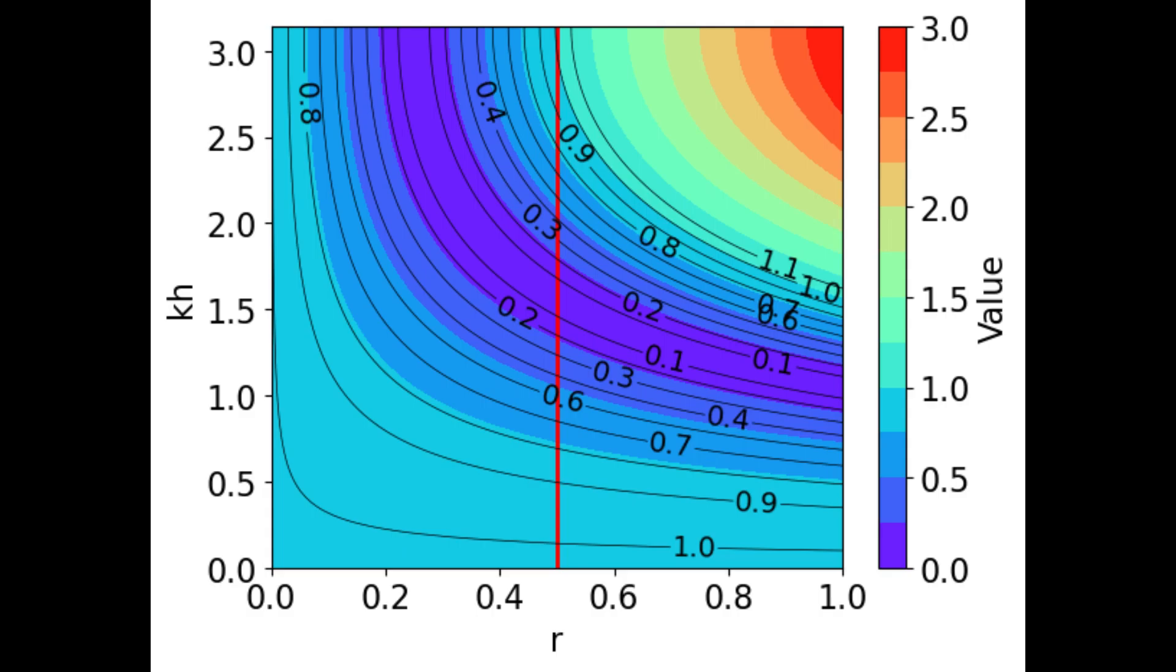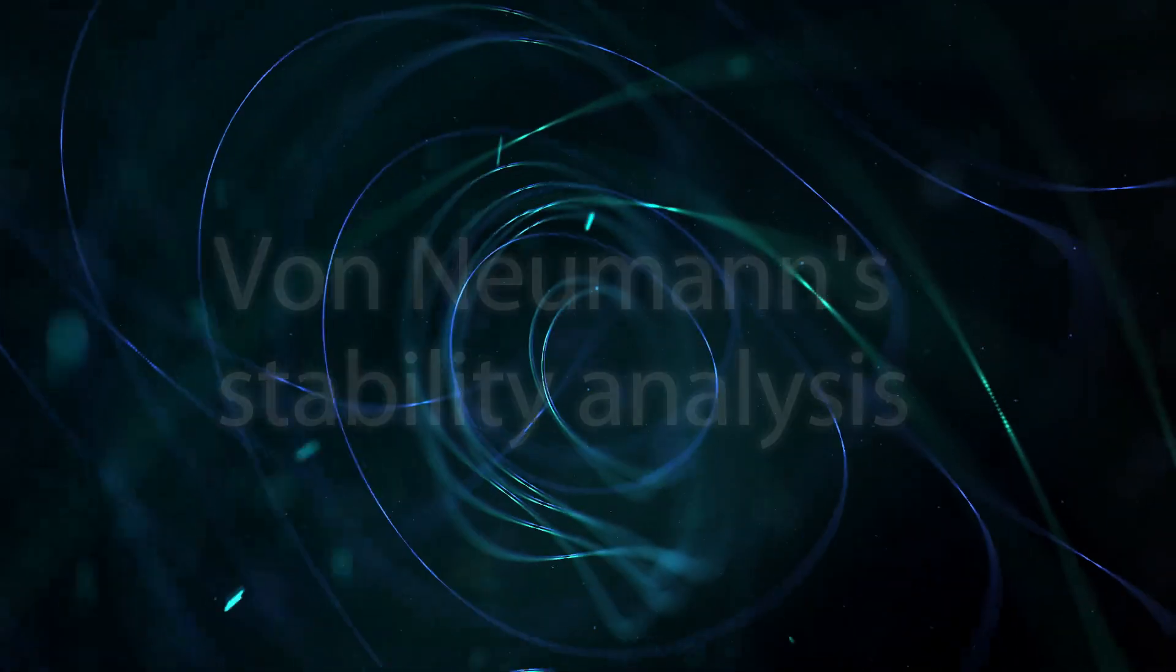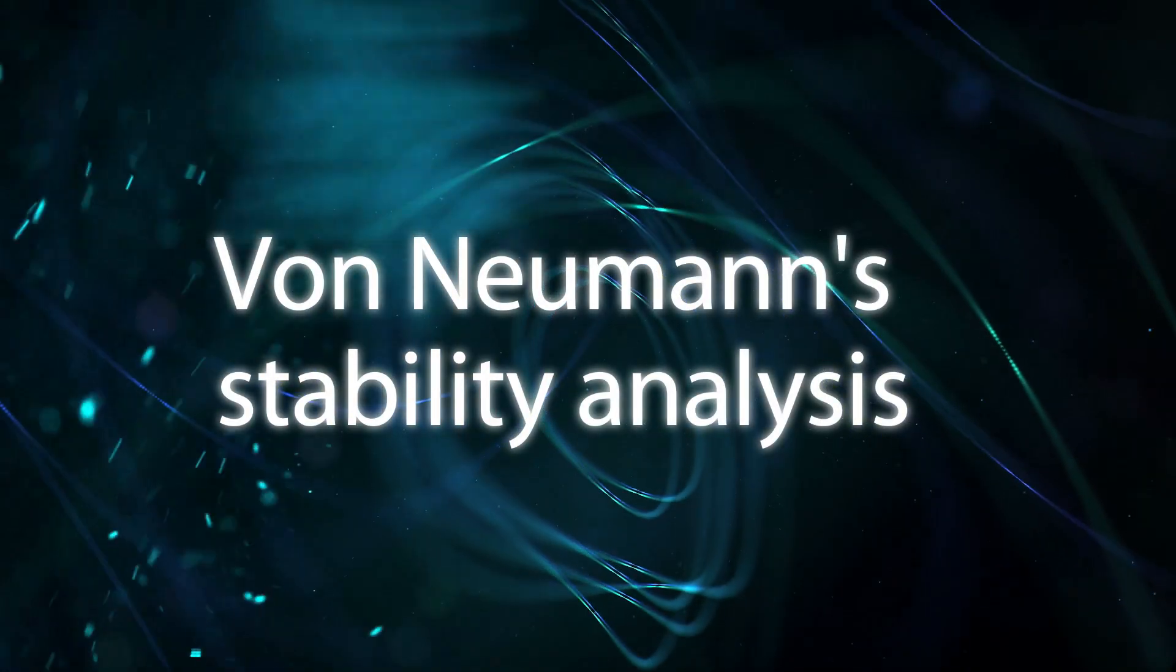If you look at the contour plot of the numerical amplification factor, you can notice all the contour lines are less than 1 when the diffusion number is less than 0.5. Congratulations! You have learned how to apply Von Neumann stability analysis.